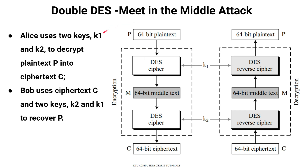We use two keys, K1 and K2, to encrypt plaintext P into ciphertext C. There is a 64-bit plaintext. The first step is DES encryption with key K1, which produces a middle text. Then the middle text is encrypted again using another key K2, producing the 64-bit ciphertext.